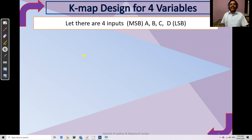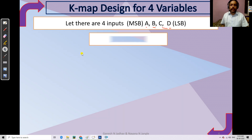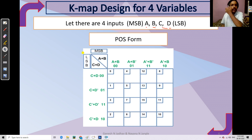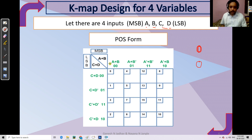Let's see how to design the K-map for four variables. I am considering four variables A, B, C, D with A as MSB and D as LSB. In the POS form, the output must be zero. To get a zero output, we need to find the right combination of inputs. The MSBs are written on the sides as A plus B and C plus D, using Gray code.